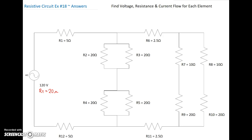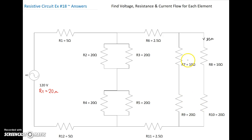Let's walk through and see any series connections that we have — we're going to add those up. Parallel circuits, we're probably going to do product over sum. Let's start over here with R8 and R10. R8 is 10 ohms, R10 is 20 ohms. Those guys are in series, so they give us 30 ohms. Now let's take a look at R7 and R9 — same values, also in series, so another 30 ohms.